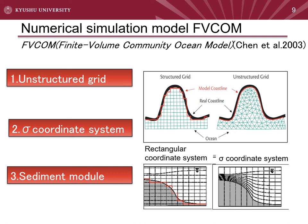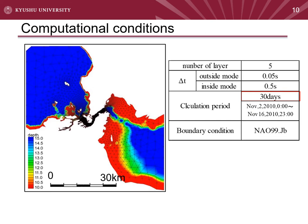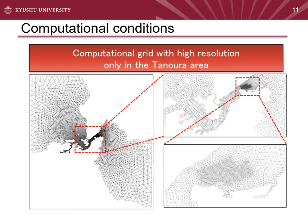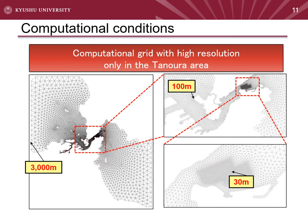We use FVCOM. FVCOM is a numerical simulation model developed by Chen et al. Using unstructured grids and sigma coordinate systems, this model can reproduce complex topography. Moreover, this model has various modules, and we use the sediment module. The computational period is 30 days, and boundary conditions were given with NAOM99JB. Grid size is 3000 meters at the boundary, 500 meters in the strait, and 30 meters in the Tanora area.